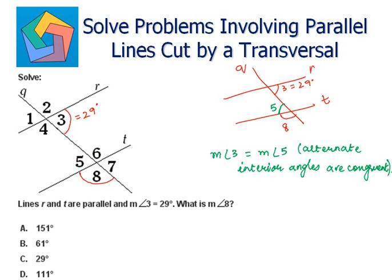Angle 3 is given as 29 degrees, so this implies the measure of angle 5 is also 29 degrees. And angles 5 and 8 are lying on a straight line, so they form a linear pair. Let's apply the property: the measure of angle 5 plus the measure of angle 8 is equal to 180 degrees — linear pair.